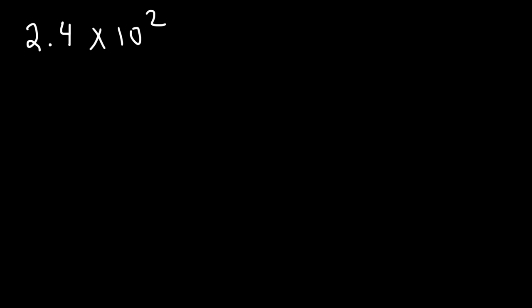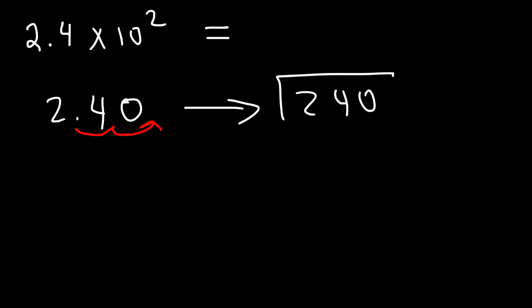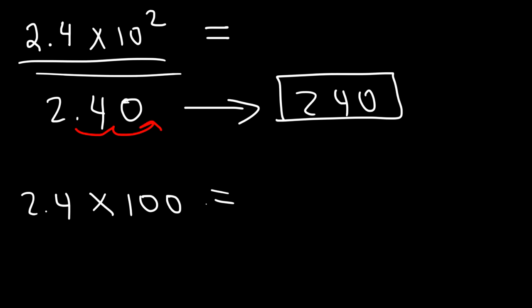Now let's switch it up and work on converting a number from scientific notation to standard notation. Let's say we have 2.4 times 10 to the 2. Since it's a positive exponent, we need to increase the value of 2.4 by moving the decimal to the right — 2 units — giving us 240. You can also think of it as 2.4 times 100, which is 240.